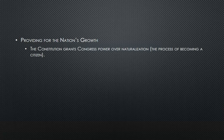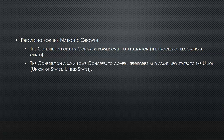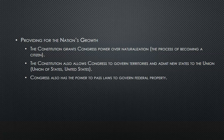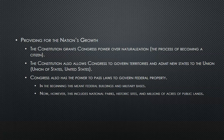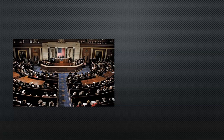Providing for the nation's growth. The Constitution grants Congress power over naturalization — the process of becoming a citizen. The Constitution also allows Congress to govern territories and to admit new states to the Union. Congress also has the power to pass laws to govern federal property. In the beginning, this meant federal buildings and military bases; now, however, this includes national parks, historic sites, and millions of acres of public lands.